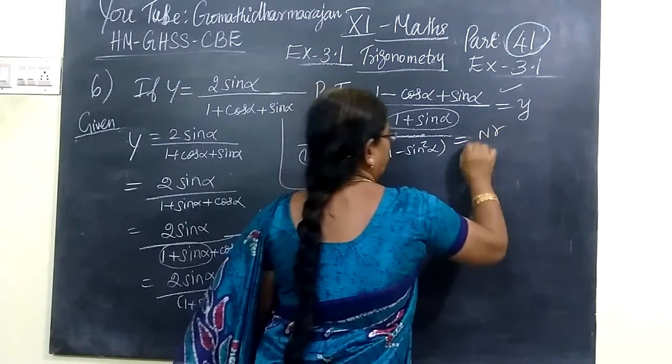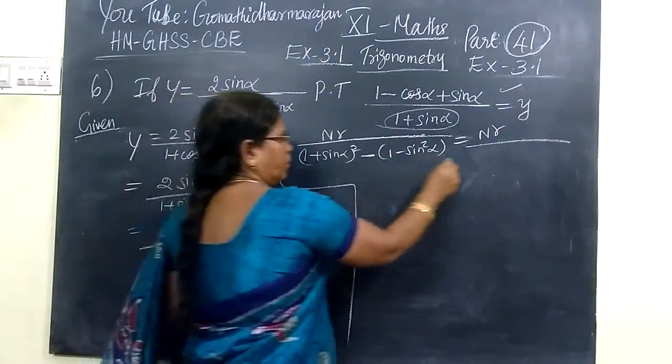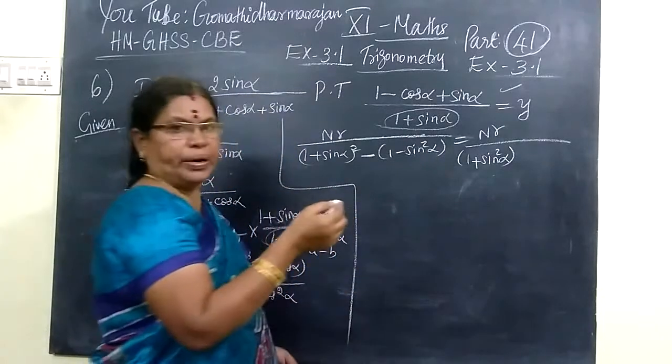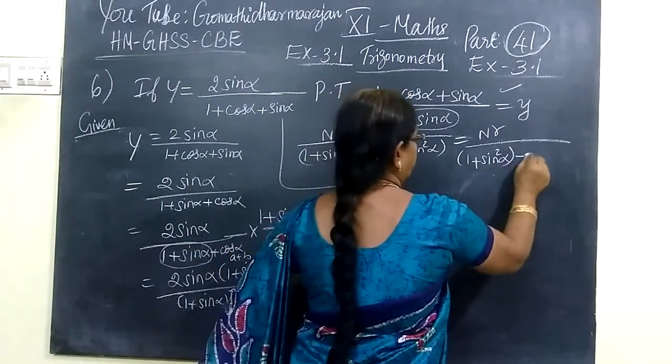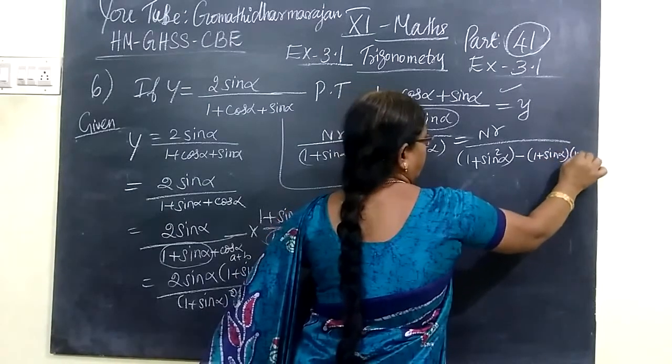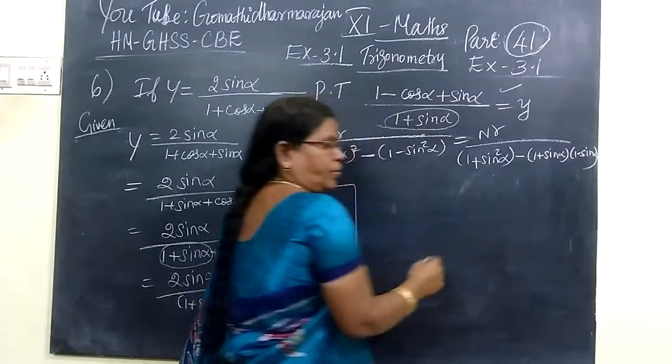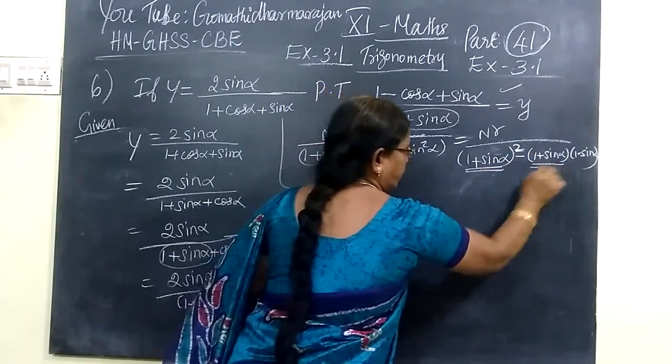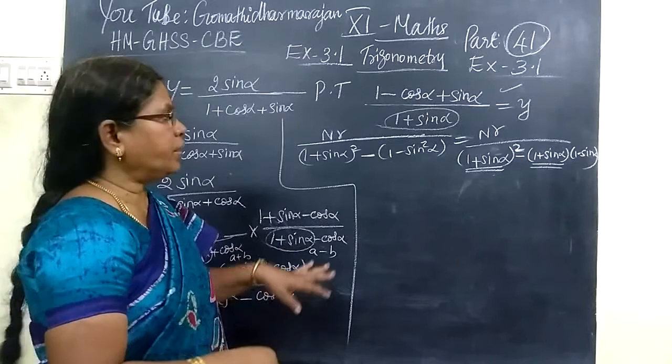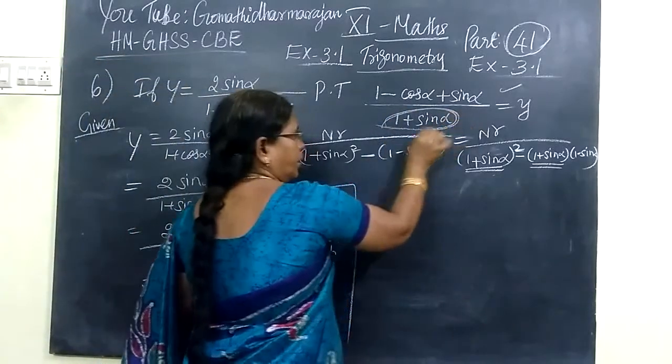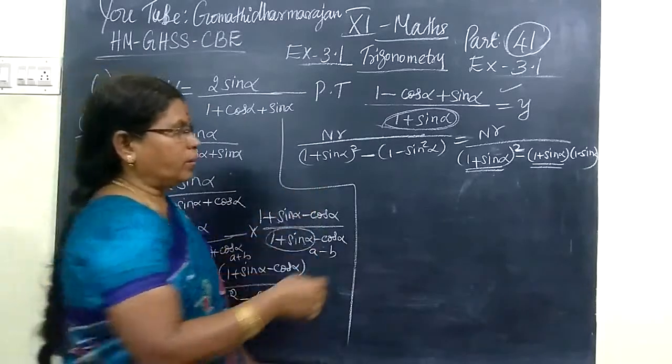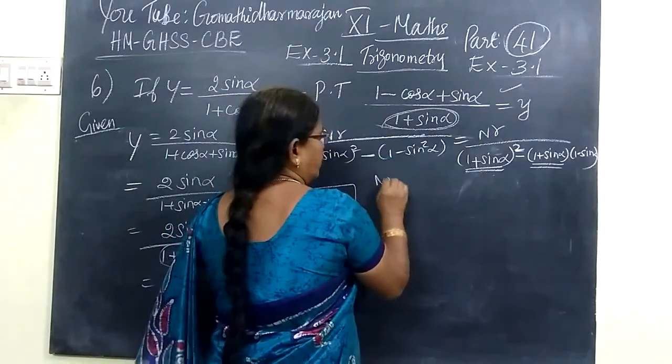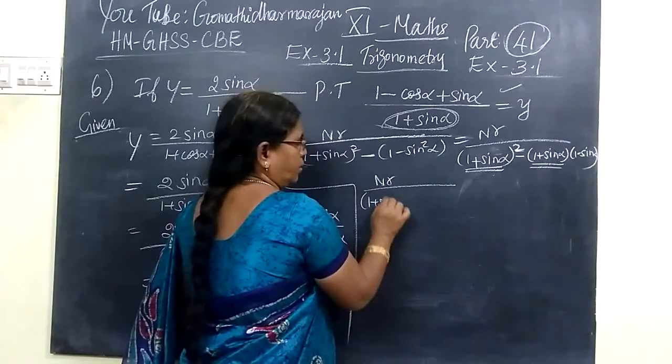So my numerator, you write as every time 2 sin alpha times 1 plus sin alpha whole square minus cos side alpha. 1 minus sin square alpha equals cos square alpha. This is equated - numerator by denominator where 1 plus sin square alpha appears.